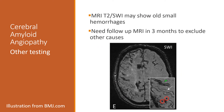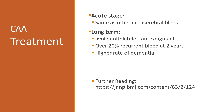MRI scan T2 SWI may show some old small hemorrhages. It is good practice to follow up with an MRI scan in about three months to exclude other causes of the bleeding.